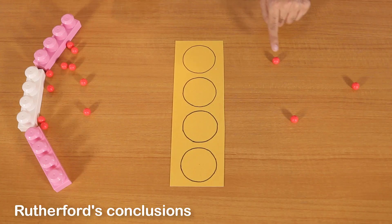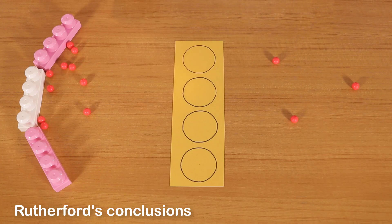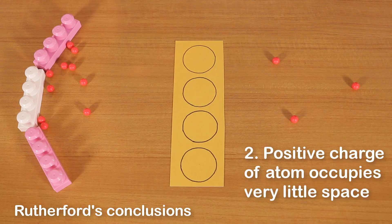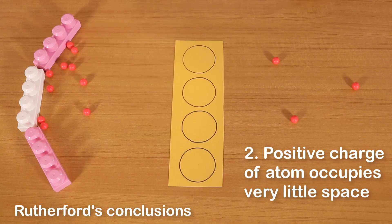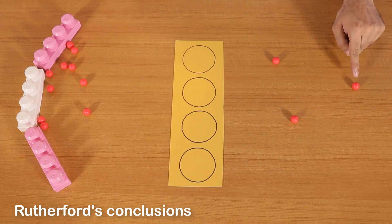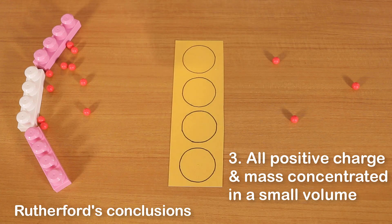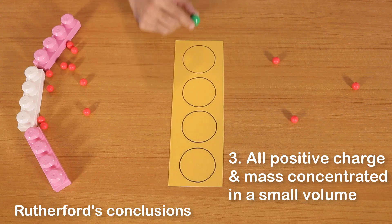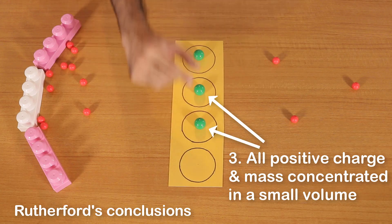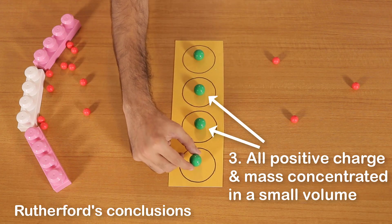Very few alpha particles are deflected. So the positive charge of the atom occupies very little space. Even fewer alpha particles get rebounded back to their original path. So all the positive charge and mass of a gold atom is concentrated in a very small volume within the atom, represented by these tiny green spheres here. So these are representing the positive charge and mass of the atom.